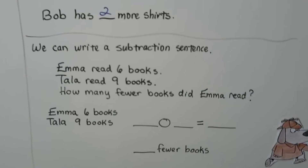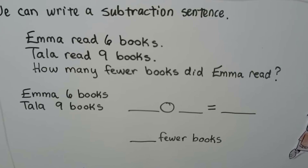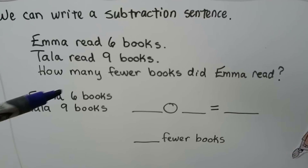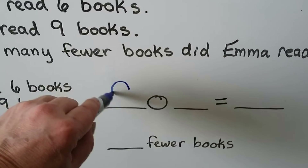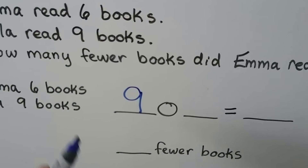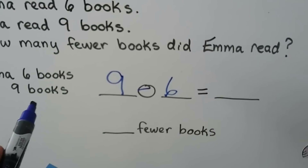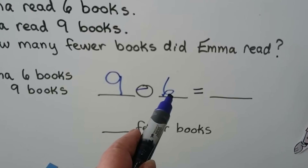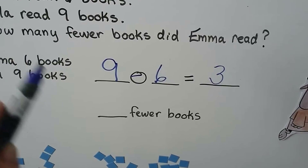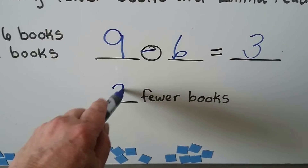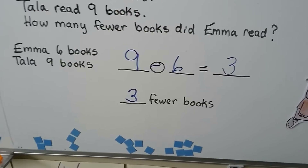We can write a subtraction sentence. Emma read six books. Tala read nine books. How many fewer books did Emma read? We put Tala's books here and take away the books that Emma did read, minus six. Nine minus six is equal to three. Emma read three fewer books. If she reads three more books, then she'll have read nine books also, and they'll be the same.